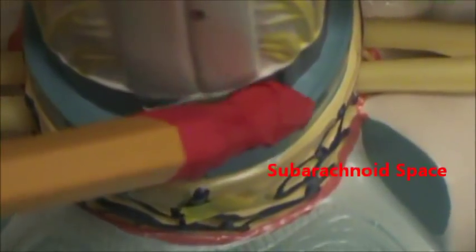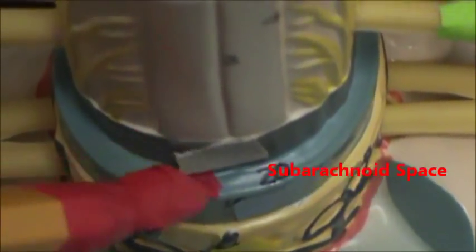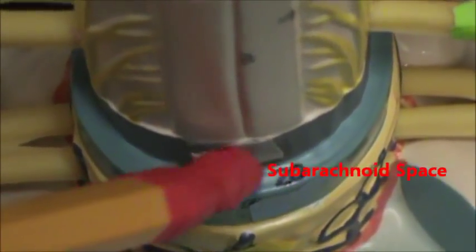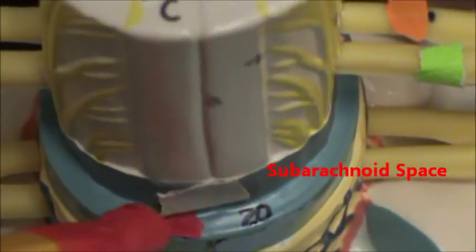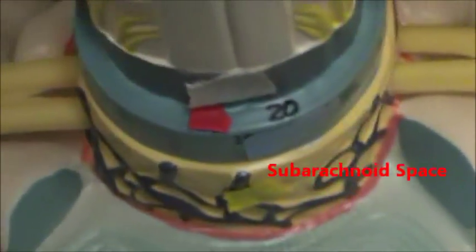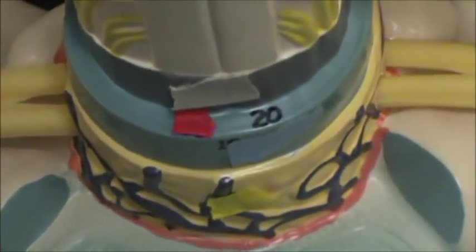And then here we have in red the subarachnoid space. We don't identify the other ones on this model because they're really hard to distinguish. But there's your subarachnoid space in red, which houses your cerebral spinal fluid.